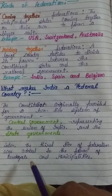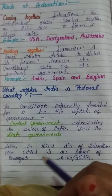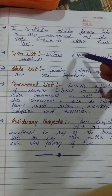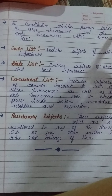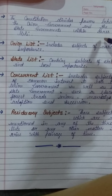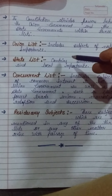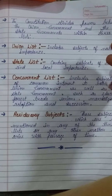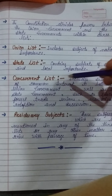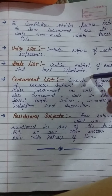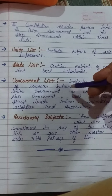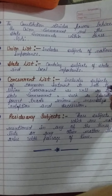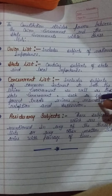The constitution divided power between the union government and the state government within three lists. The Union List contains subjects of national importance such as defence and foreign affairs. The State List contains subjects of state and local importance, like education and health. The Concurrent List includes subjects of common interest to both the union government and the state governments, such as education, forest, trade, marriage, and adoption.